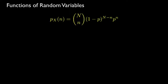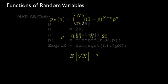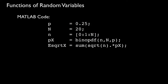As a final example, suppose we have a random variable with a binomial distribution with success probability p and number of trials n. Let's suppose that the success probability is 0.25 and the number of trials is 20. We want to determine the expected value for the square root of this random variable. If we wanted to use MATLAB to solve for this expectation, we could use the following code segment.